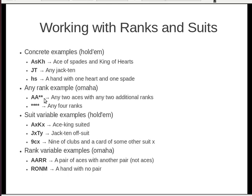Looking at the any-rank star: AA** is any two aces with any two additional ranks — the star means any rank. Four stars would be any four ranks. Suit variables let you describe relationships between suits in a hand. AX KX means ace-king suited — X takes on the value of some suit and must be the same everywhere in the hand. Similarly, JX TY is jack-ten offsuit, since X is one suit and Y is another. And 9CX means nine of clubs and another card that is not a club — some other suit X.